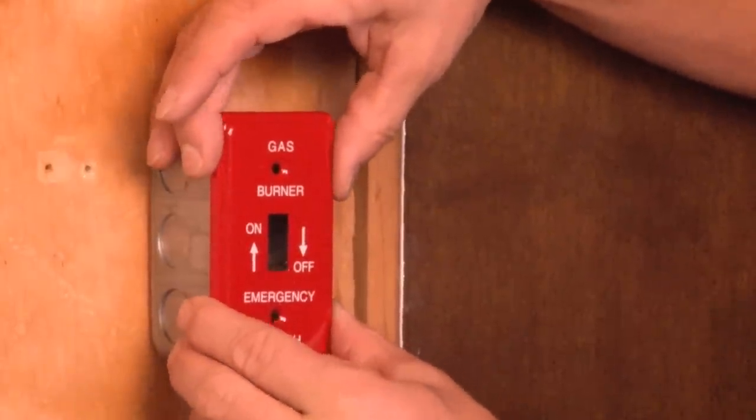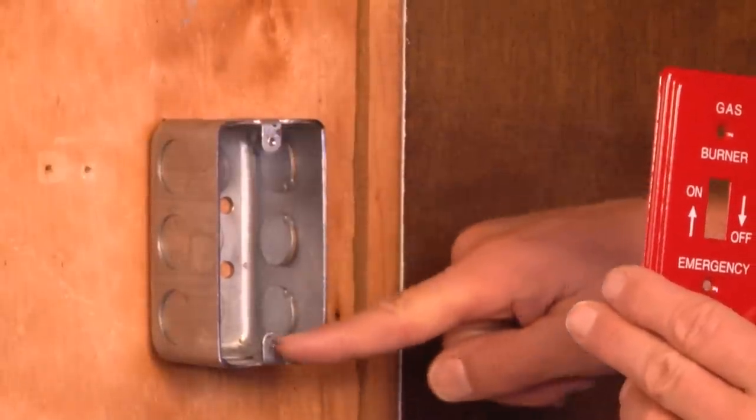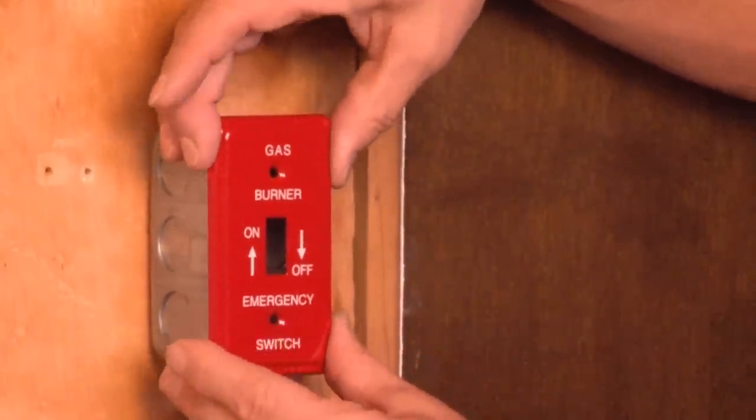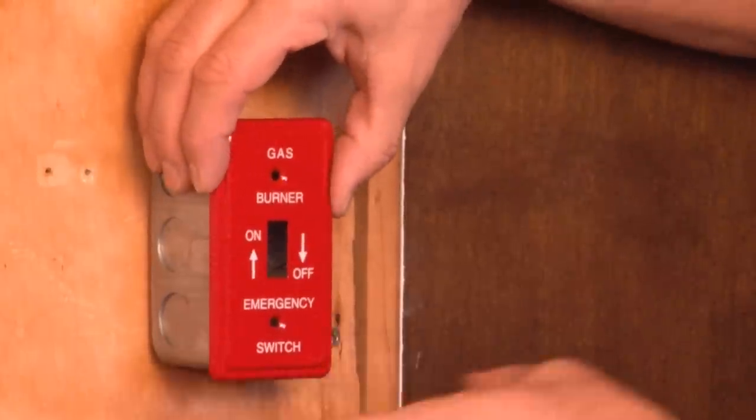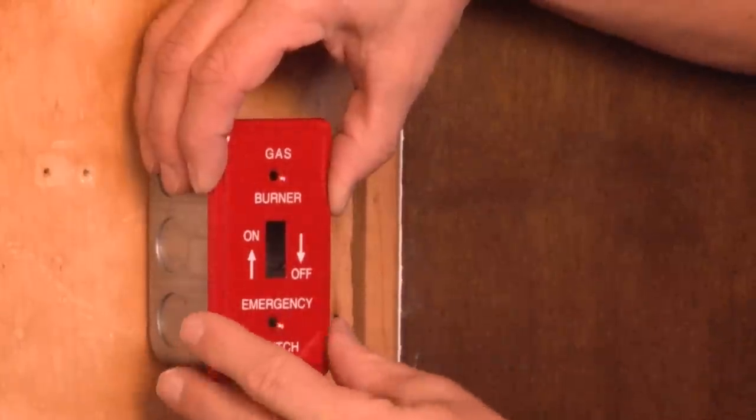It installs directly onto the switch, and the switch mounts directly to the handy box via the 632 tabs. You place the cover directly over the switch, and it comes provided with powder-coated screws that screw in directly to the toggle switch.